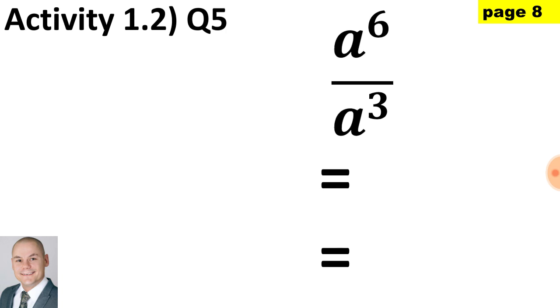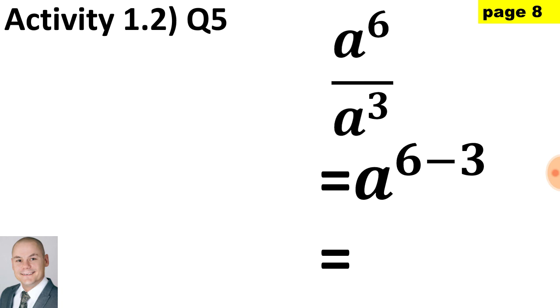Now when dividing bases that are the same we would subtract the exponents. Therefore the base a to the exponent of 6 minus 3 would give us a to the 3.